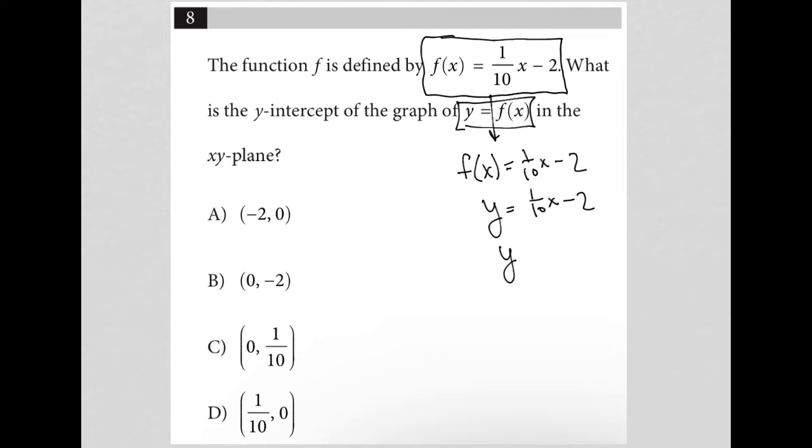This is in the format of y = mx + b, where m represents the slope and b represents the y-intercept. Understanding that makes this question extremely simple, because -2 is in the position of b, which means -2 is our y-intercept.